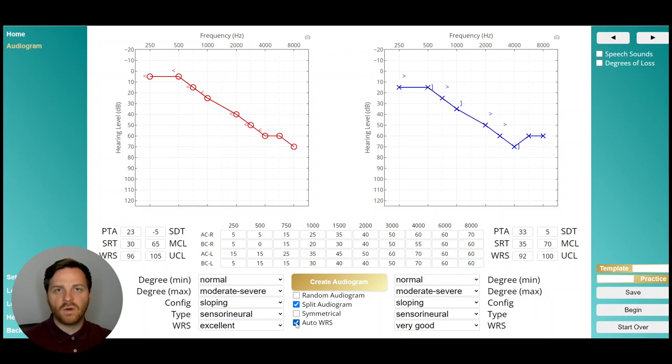AutoWRS attempts to estimate the word recognition score that best matches the audiogram that you've designed. Sometimes your word recognition score won't align with your thresholds, so if you want to manually set your word recognition thresholds, you'll need to uncheck AutoWRS and then choose the WRS score that you want for that specific case in your design.